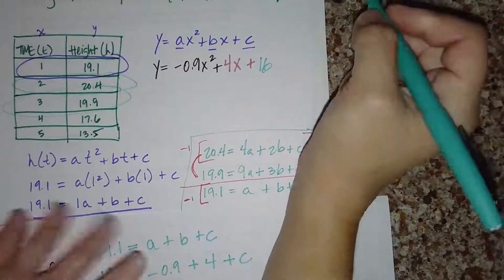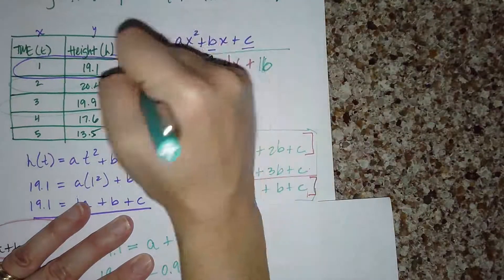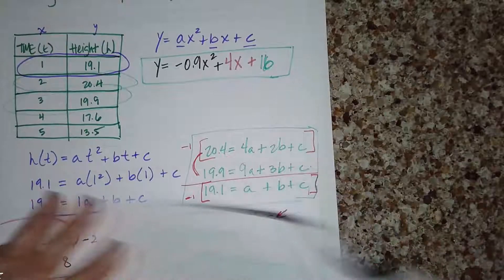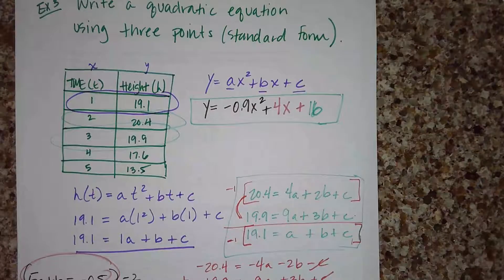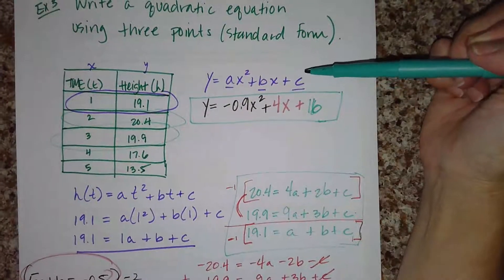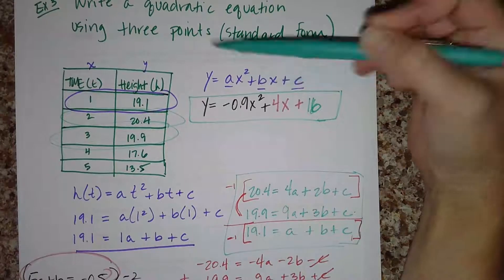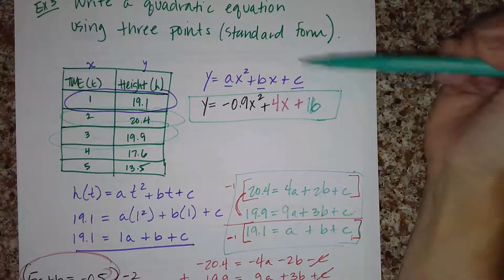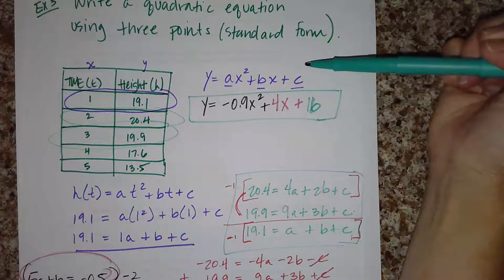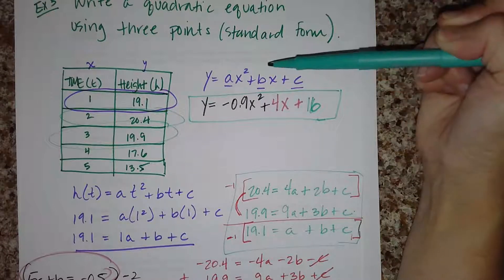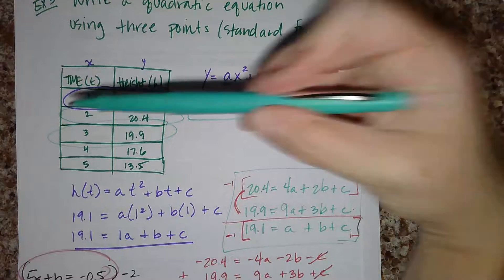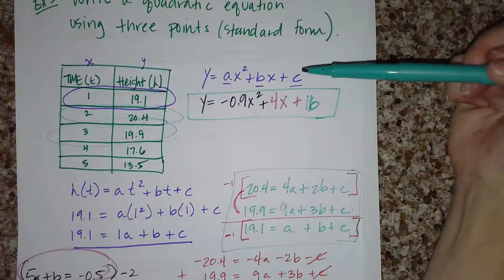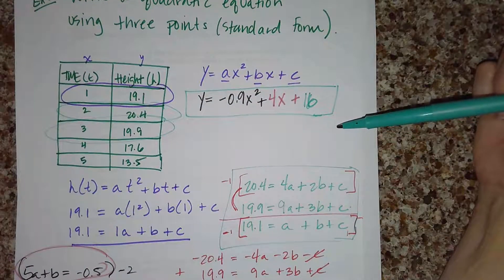As you can see, this process is much more involved than the other two methods. If you were given a y-intercept, it would be much easier — because in standard form, the y-intercept is just your c value, so you'd only need to find a and b. But since this table had no value when t equals 0, there was no y-intercept given, so we had to set up the full system the long way.